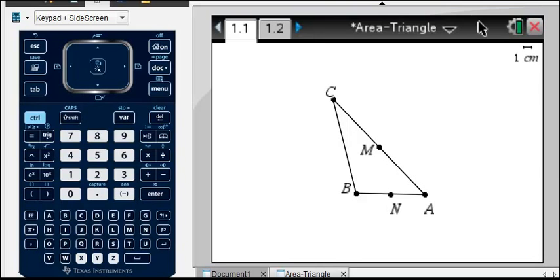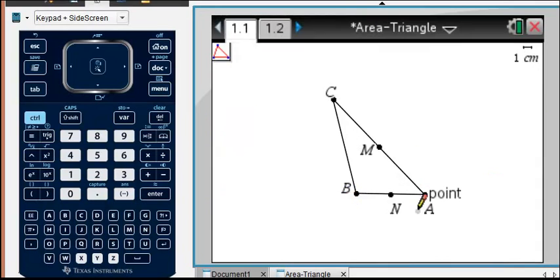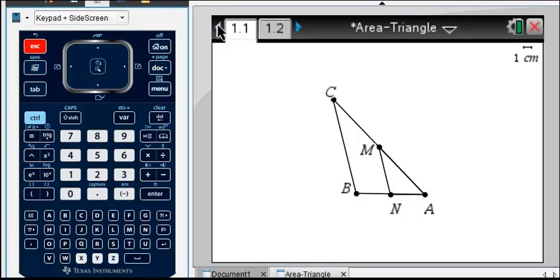Now let's go ahead and construct Triangle AMN. What I'm going to do now is rotate Triangle AMN around point M.